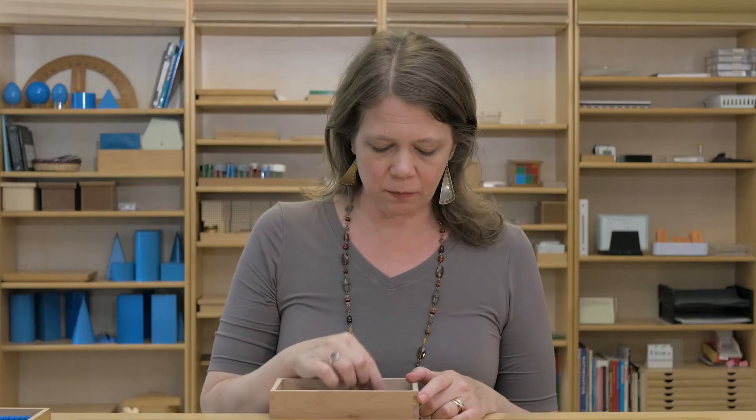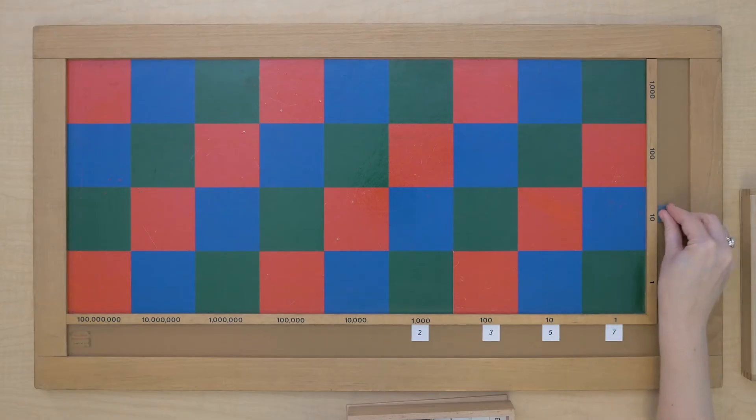And let's multiply that by 23. So our multiplicand is down here at the bottom and our multiplier goes along the side and we use gray for our multiplier like we always do. So let me show you how we begin this multiplication.